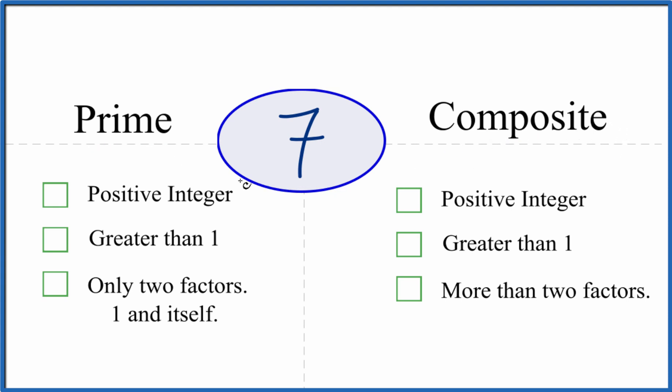First we need to ask, is 7 a positive integer? It's positive, it's a whole number, yep. Is it greater than 1? It's greater than 1.